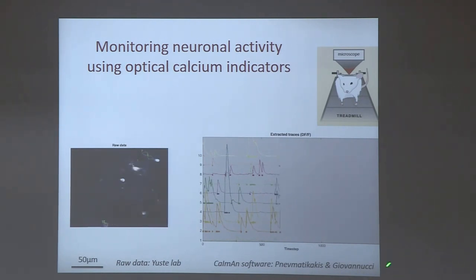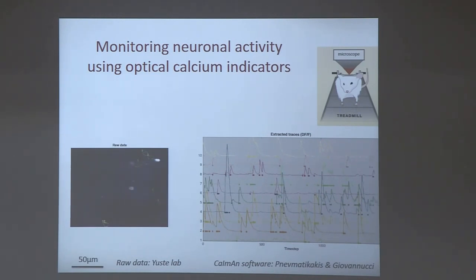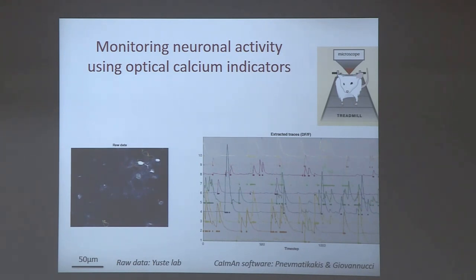I also have a shameless plug for software developed in my group to automatically extract time traces of activity of individual neurons from such videos. This has been a major bottleneck in experimental laboratories, because previously neurons were delineated manually and it took more time to analyze data than to do the experiments. Now we have a package that in most cases allows automatic extraction of those activity traces. Because what is being imaged here is calcium concentration, the spikes are low-pass filtered, requiring an additional deconvolution step. Spikes are indicated here by asterisks.